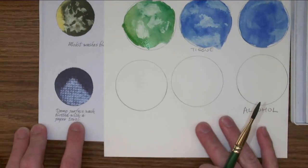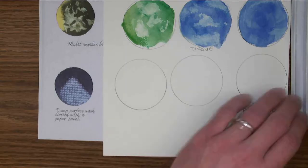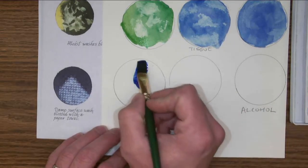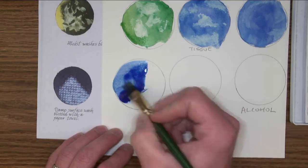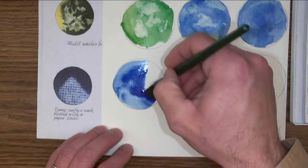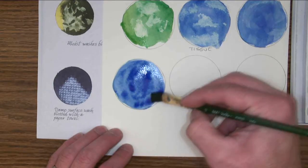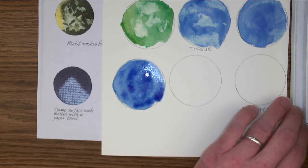Damp surface wash blotted with a paper towel. So damp surface. Now the surface of the paper doesn't have to be damp, the wash itself can create the dampness. I'm going to darken the wash a little bit, so I'm just going to grab some black.